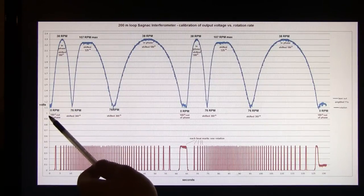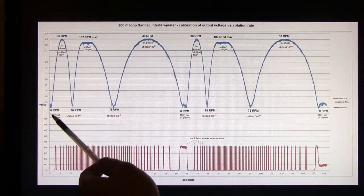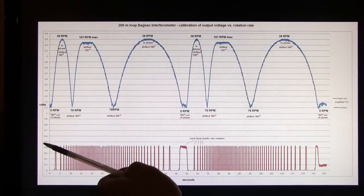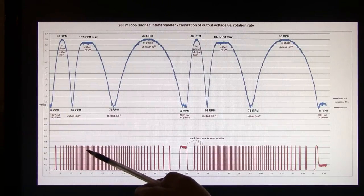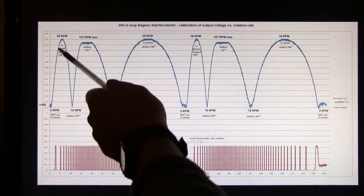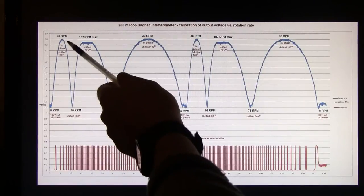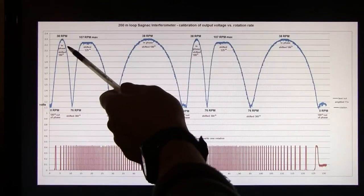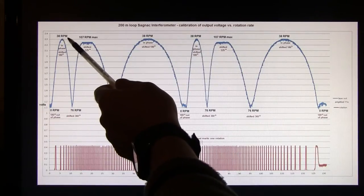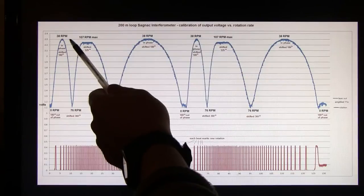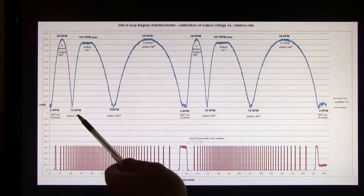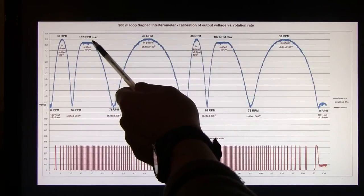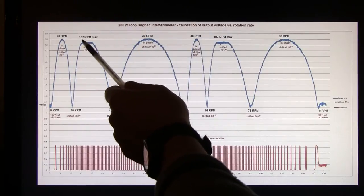And we set the phase to 180 degrees out of phase to begin with. So we're at a voltage minimum. And then as the rotation starts to increase here, we go up to about 38 RPM and we hit our maximum voltage which is the in-phase condition for the two counter-propagating beams. As we continue to increase the speed, they pass through and go back to out-of-phase. Then as we continue to increase, they go back to in-phase and we reach our maximum speed.